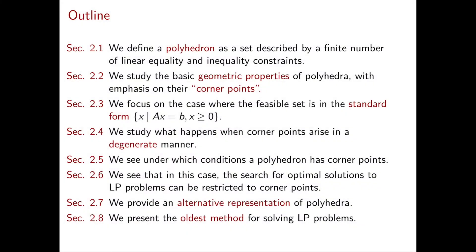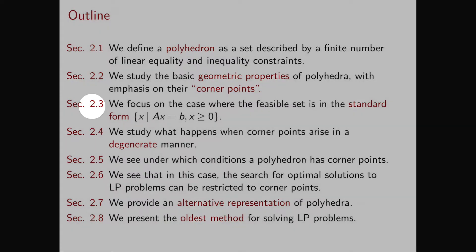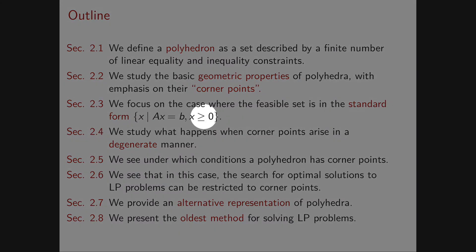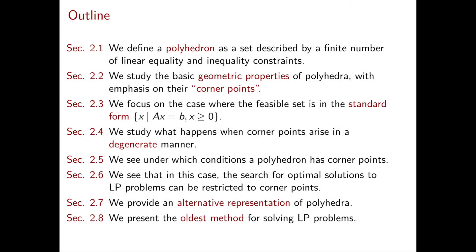Next we're going to study some basic geometric properties of polyhedra, and in particular we're going to study their corner points, which we briefly discussed in the previous chapter. Then we're going to look at a very special case of a polyhedron, namely polyhedra that come from a standard form linear programming problem — the set of points satisfying x greater than or equal to 0 and Ax equal to b.